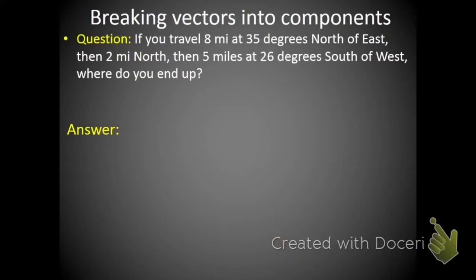For this next problem we're going to have to break our vectors into their components. It's still going to be useful to draw a diagram. So we're going to travel 8 miles at 35 degrees north of east, then we're going to go 2 miles north, and then we are going to go 5 miles at 26 degrees south of west. Now unless you're drawing this with a protractor and a ruler, it's going to be kind of hard to see exactly what's going on, but the nice thing is we can break these vectors into their components. And that's going to be how you start problems where you have vectors that are at angles. You're going to break that angled vector into an x and a y.